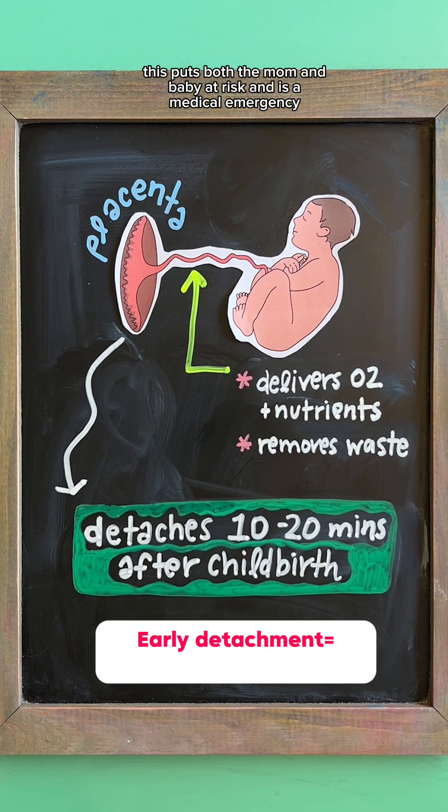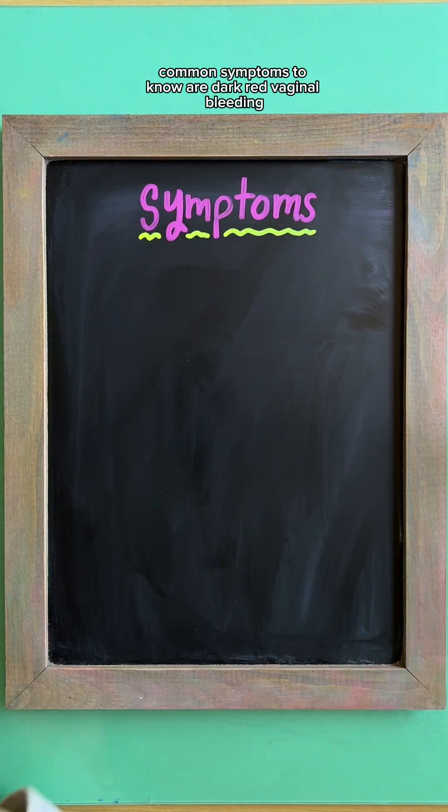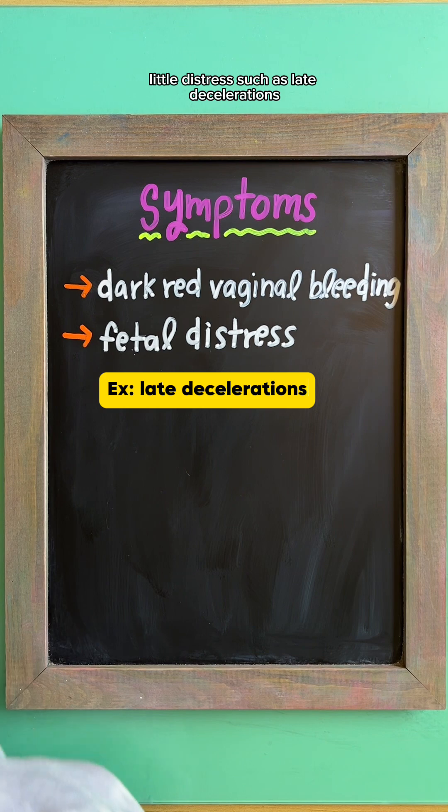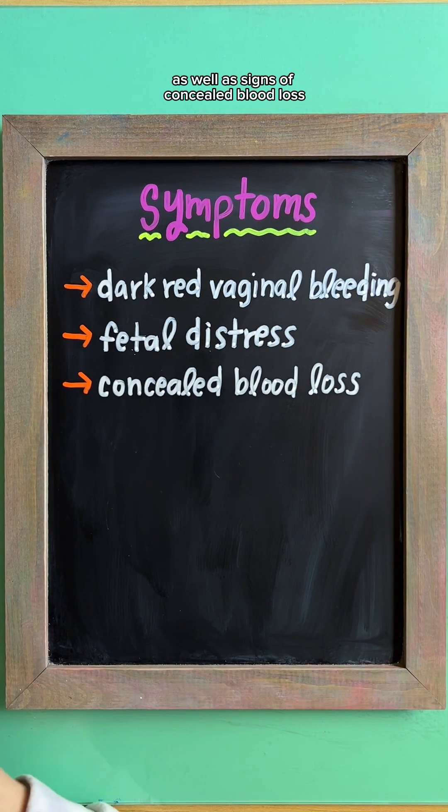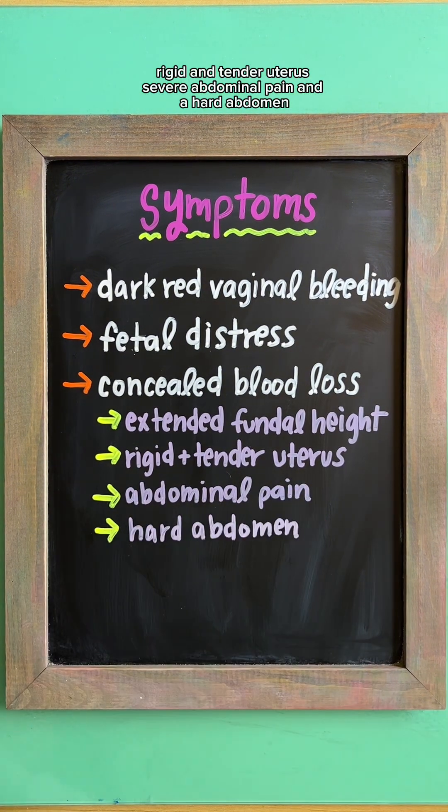So if it detaches too early, this puts both the mom and baby at risk and is a medical emergency. Common symptoms to know are dark red vaginal bleeding, fetal distress such as late decelerations, as well as signs of concealed blood loss such as extended fundal height, rigid and tender uterus, severe abdominal pain, and a hard abdomen.